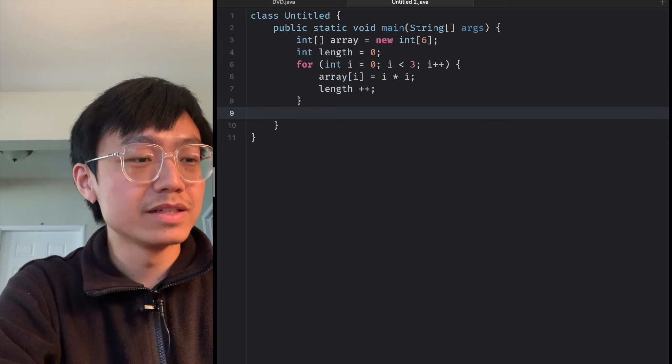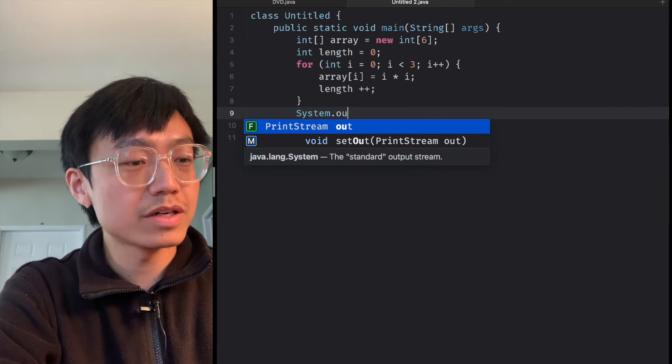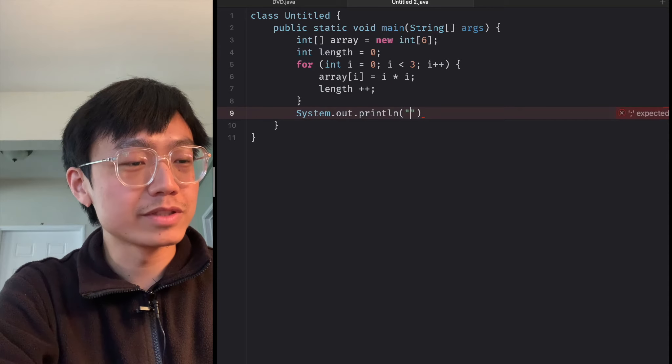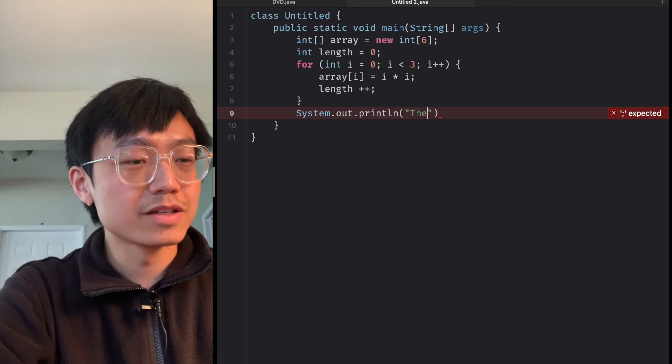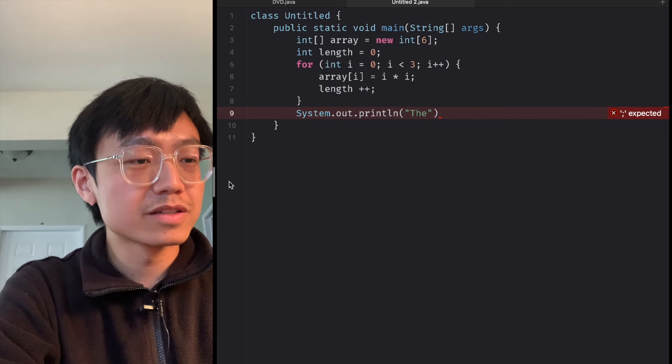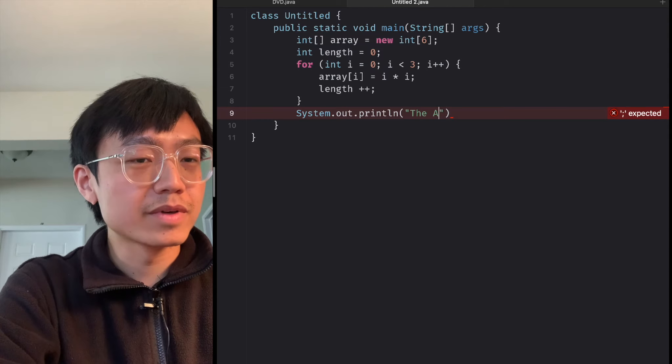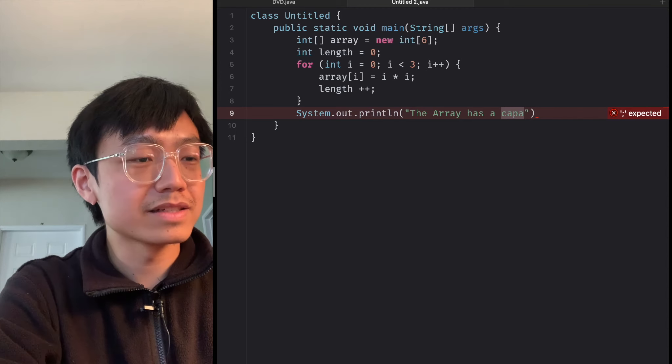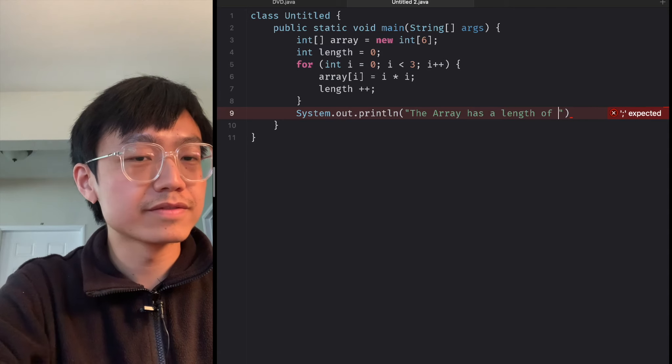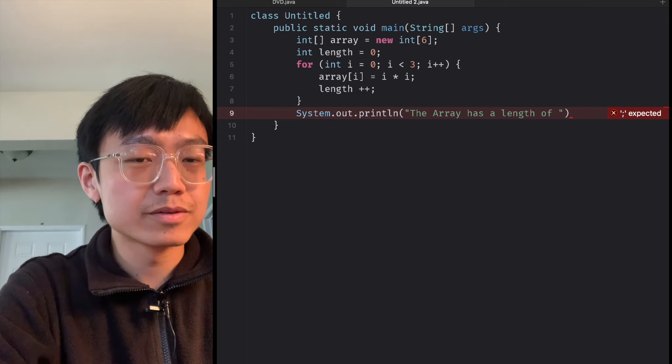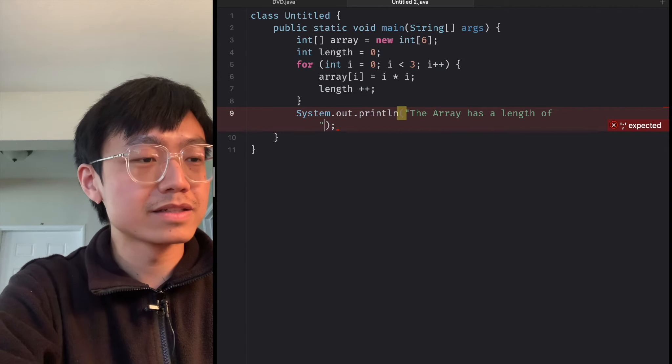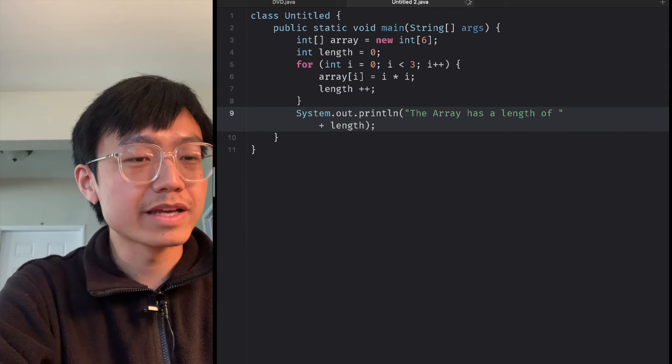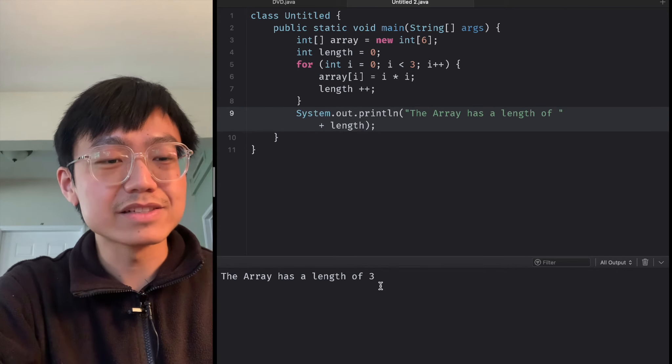And then we use System.out.println. The array has a length, and we add the length variable here. So we can print it out. The length is three.